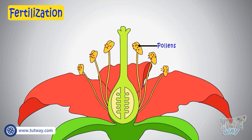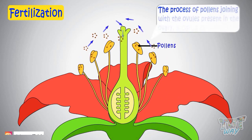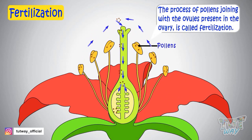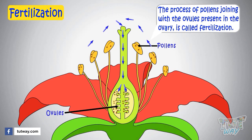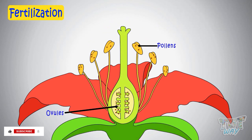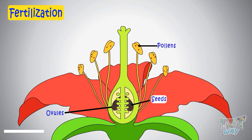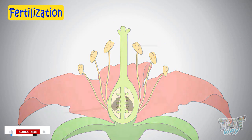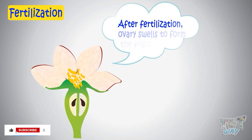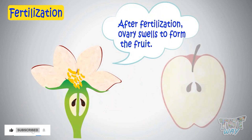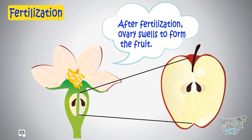Fertilization forms the seeds inside the ovary, and after fertilization, this ovary changes into a fruit. That's why seeds are found inside the fruit. Now let's see what pollination is.